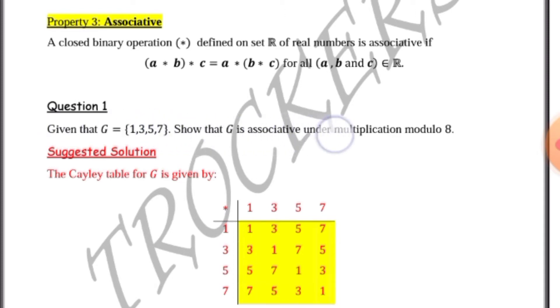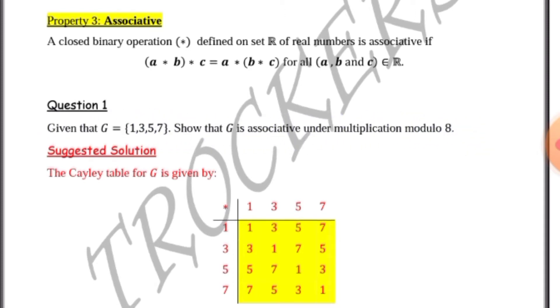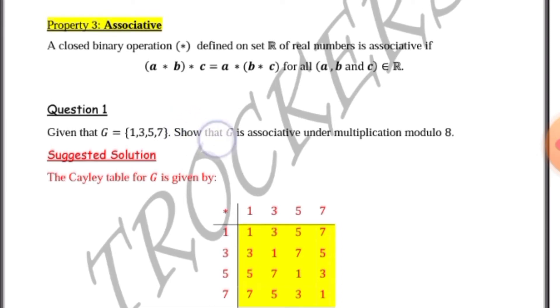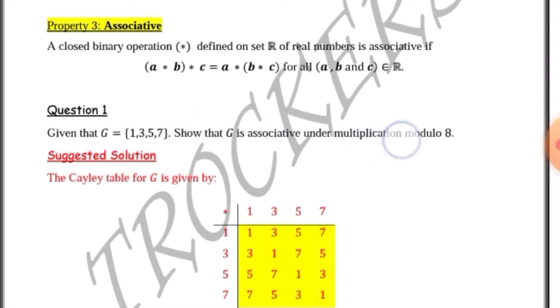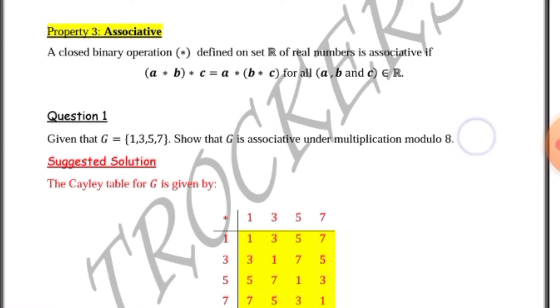Let's consider this question. Given that G equals 1, 3, 5, 7, show that G is associative under multiplication modulo 8.